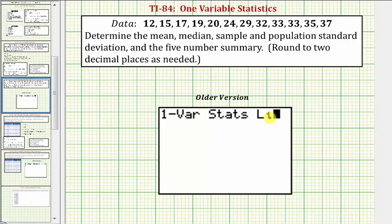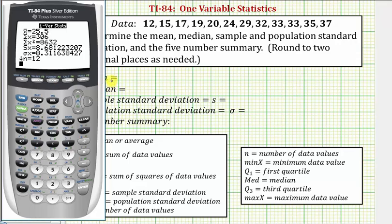But if the data was in, let's say, L2 or L3, we'd have to enter that here before pressing enter. So in the older version, once you press enter, the screen would look like this. Notice from this screen, we can determine the mean, which is X bar, as well as the sample and population standard deviation, where SX is the sample standard deviation, and sigma X is the population standard deviation.